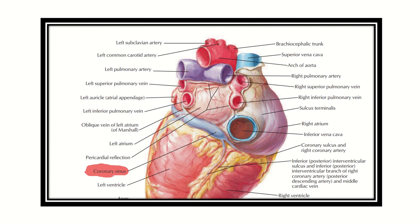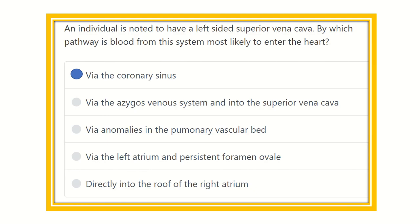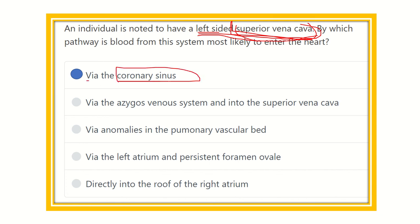So our final answer is via the coronary sinus. The left-sided superior vena cava is not usually present because the superior vena cava normally exists on the right side. This is therefore a congenital anomaly, and in this case the left-sided superior vena cava drains its blood into the right atrium via the coronary sinus. Our final answer is option A: via the coronary sinus. Thank you all.